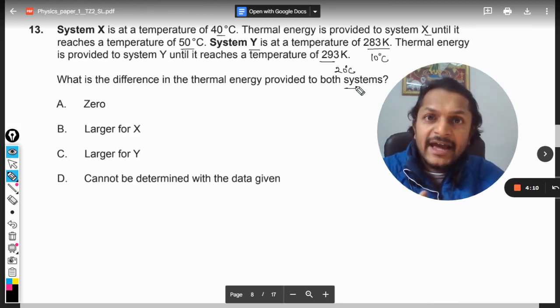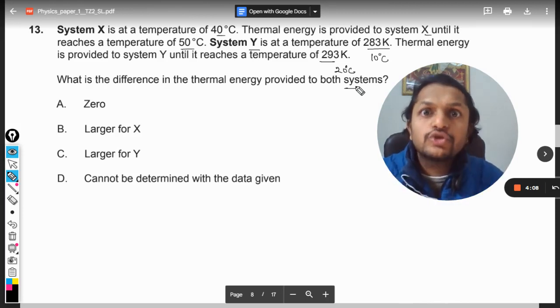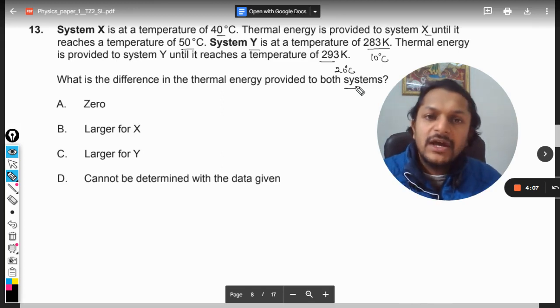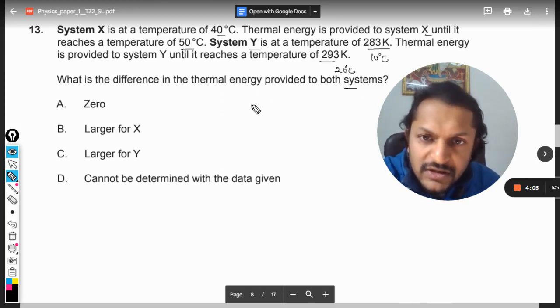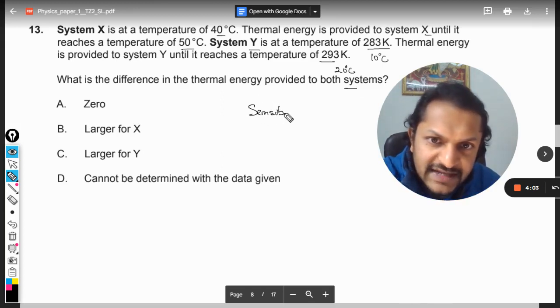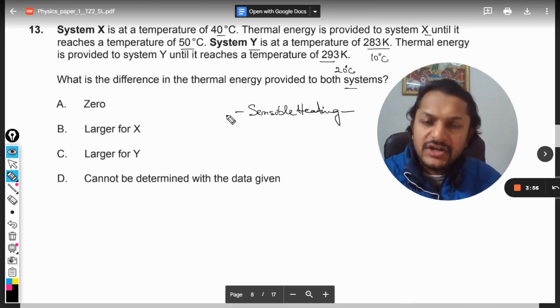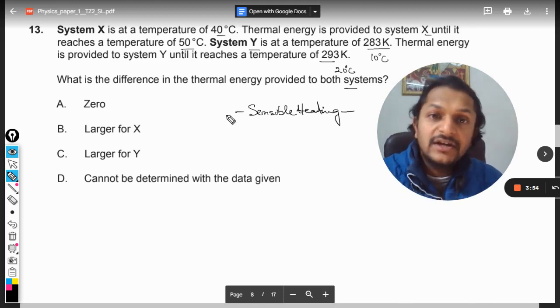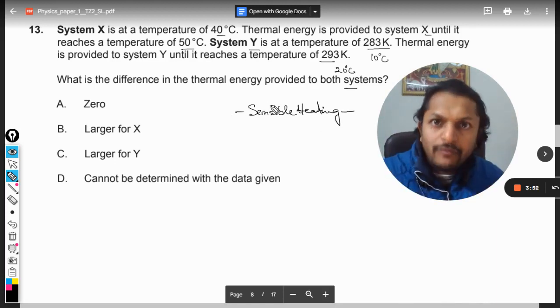This becomes the typical case of sensible heating. Sensible heating is the heating in which temperature rises, or the heat withdrawal when the temperature falls. So we say Q is equal to MC delta T.